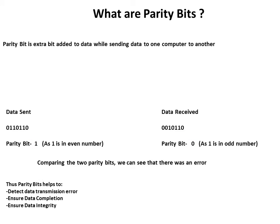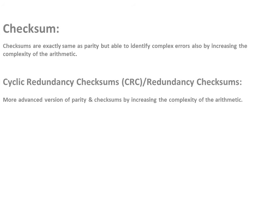Thus, parity bits help to detect transmission errors, ensure data completion, and ensure data integrity. Checksums are exactly the same as parity but are able to identify more complex errors by increasing the complexity of the arithmetic.